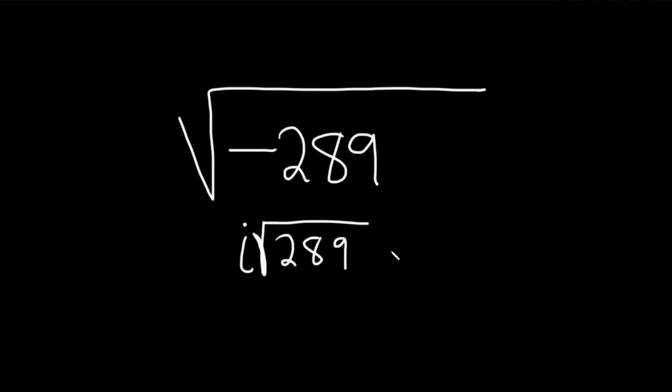Now the square root of 289 is 17. So this is equal to i times and then 17.